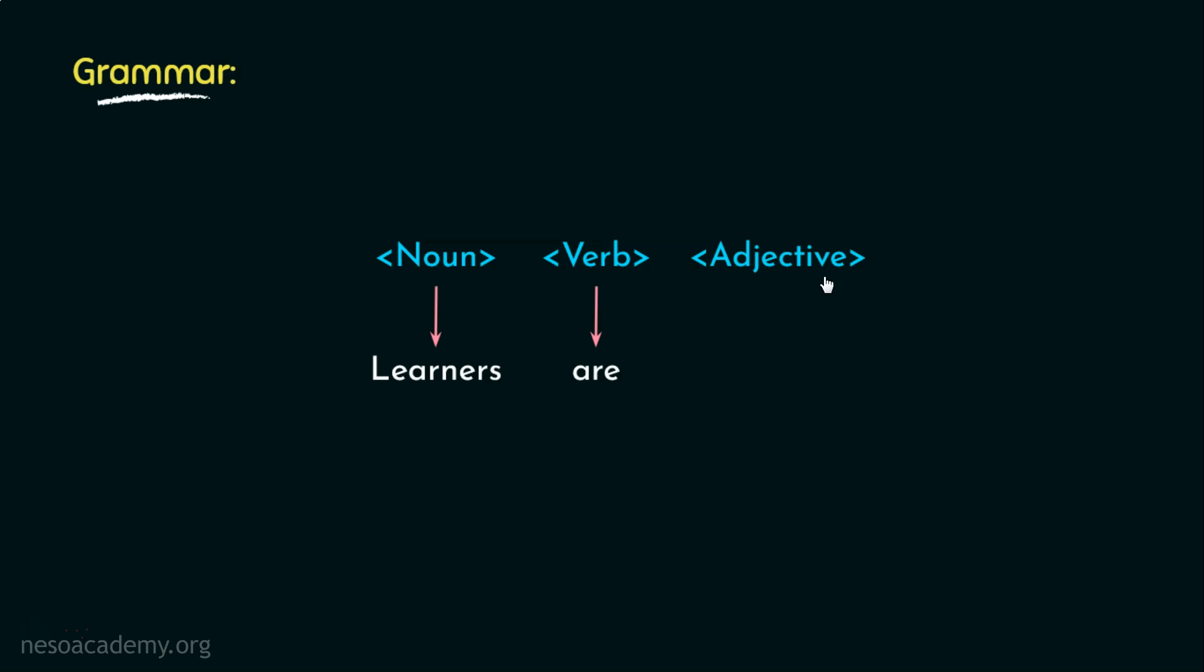Then again, for adjective, we have two more options, Awesome and Good. Let's select Awesome, and now the adjective's position has also been fixed. We can't undo that.